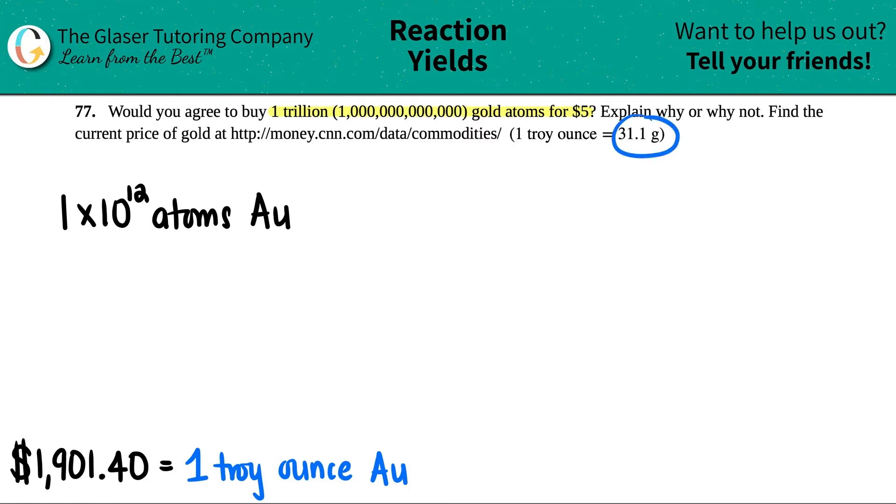Let's try to get it into how many grams this would be. This is conversions from a couple of the first chapters in chemistry. I can go from atoms to moles to grams. Atoms of Au go on the bottom and moles of Au go on the top. Remember that conversion, that's Avogadro's number. One mole of gold is 6.022 times 10 to the 23rd.